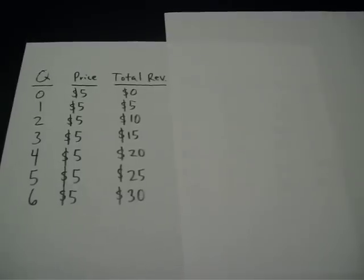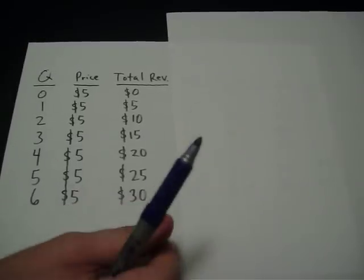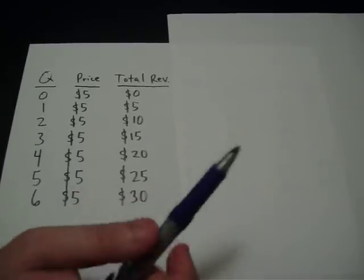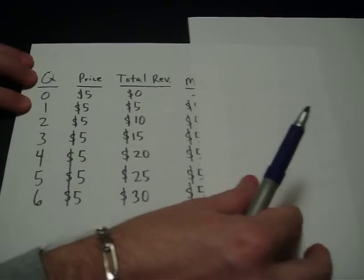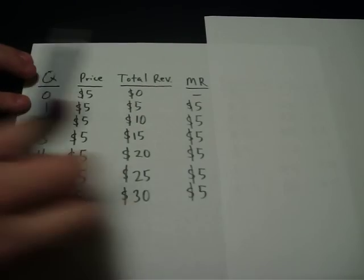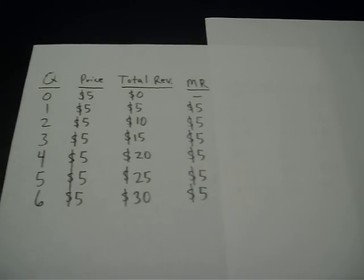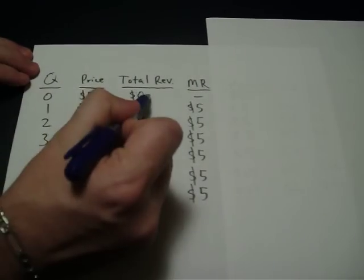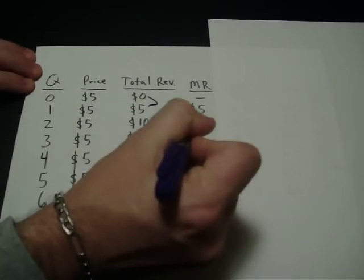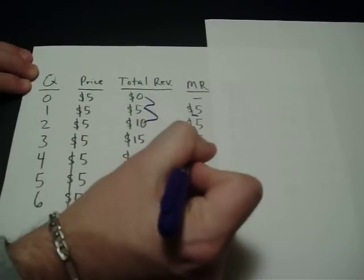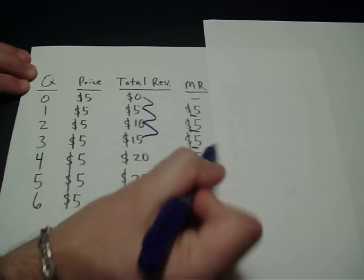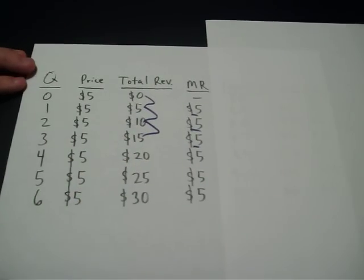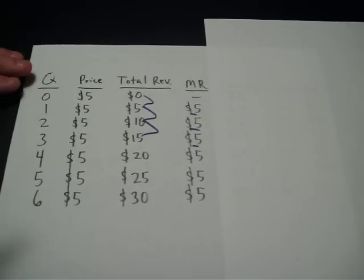The next column is marginal revenue. Marginal means each additional — so what's the additional money they're bringing in as they sell one more? It's five dollars. Between each row it went up by five, went up by five, went up by five again. So marginal revenue is five dollars all the way down the line.